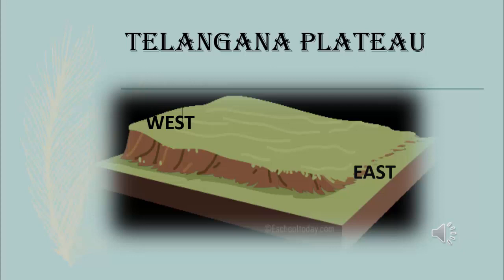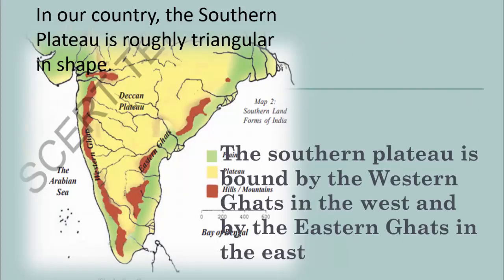The Deccan Plateau has a high and steep edge on the west, known as the Western Ghats. The Telangana Plateau is itself a part of the Deccan Plateau and slopes to the east. A large portion of Telangana falls in the plateau region, which is called the Telangana Plateau. In our country, the Southern Plateau is roughly triangular in shape, bound by the Western Ghats in the west and the Eastern Ghats in the east.